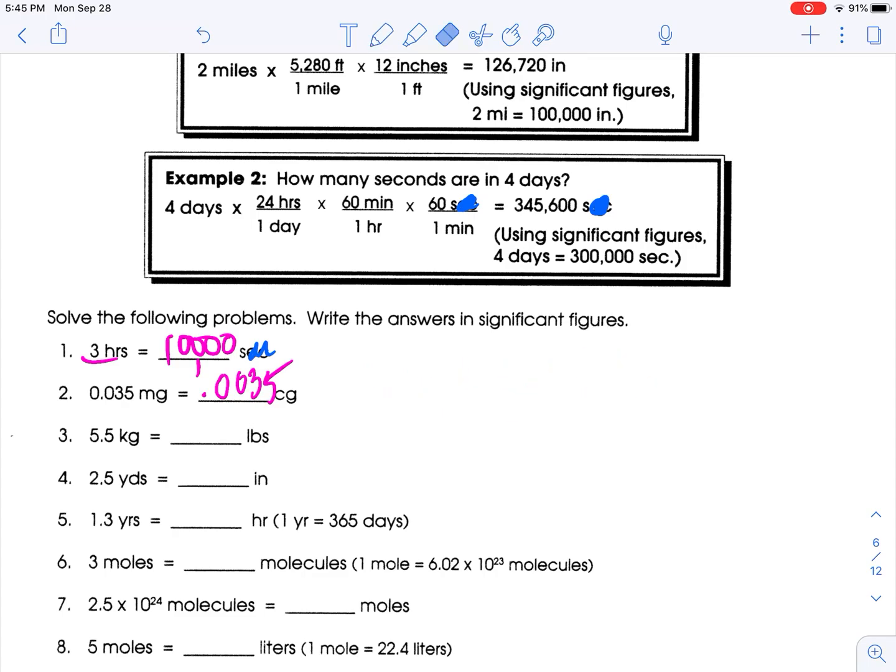Kilograms to pounds. So 5.5 kilograms. I need to go to pounds. I need that conversion factor, so I'll either provide it to you or you could look it up. One kilogram is 2.2 pounds. So 5.5 times 2.2 is 12.1. That is not the right number of sig figs. I need two sig figs: 12.